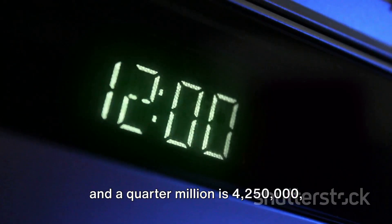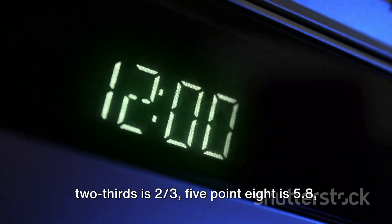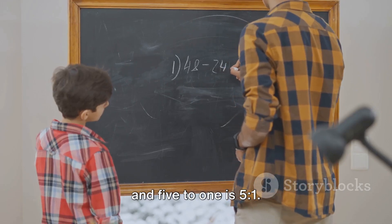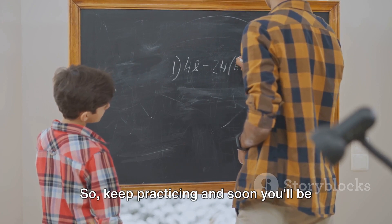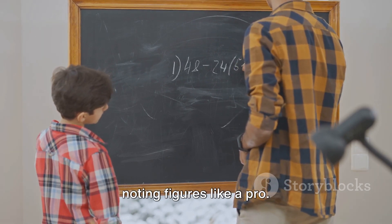4 and a quarter million is 4,250,000. 2 thirds is 2/3, 5.8 is 5.8, and 5 to 1 is 5 to 1. With practice, noting figures will become second nature. So keep practicing, and soon you'll be noting figures like a pro.